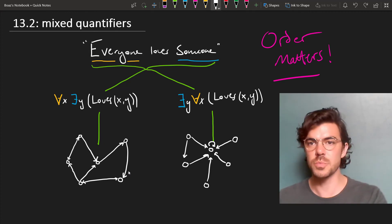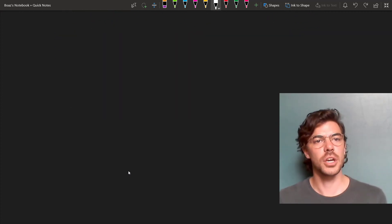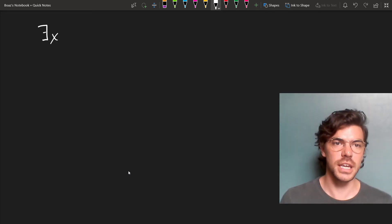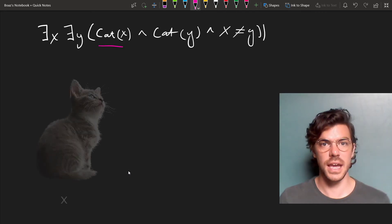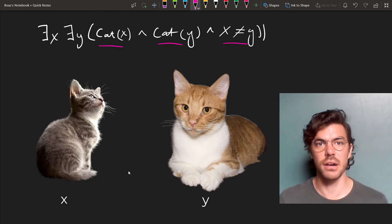Now let's look at one final thing we can use mixed quantifiers to do. In the last video, we saw that we could say that objects were discrete by using the does not equal sign. So for instance, we can say there are at least two cats by saying that x is a cat, and y is a cat, and x and y aren't the same thing.